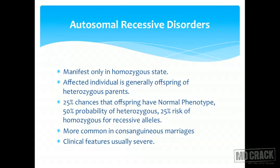Autosomal recessive disorders manifest only in the homozygous state, meaning both alleles have the problem. If one allele is present and the other is normal, the disease does not manifest — that is the meaning of recessive. Affected individuals are generally offspring of heterozygous parents who carry the trait but not the disease. When both parents pass the defective gene, the child becomes homozygous and gets the disease.